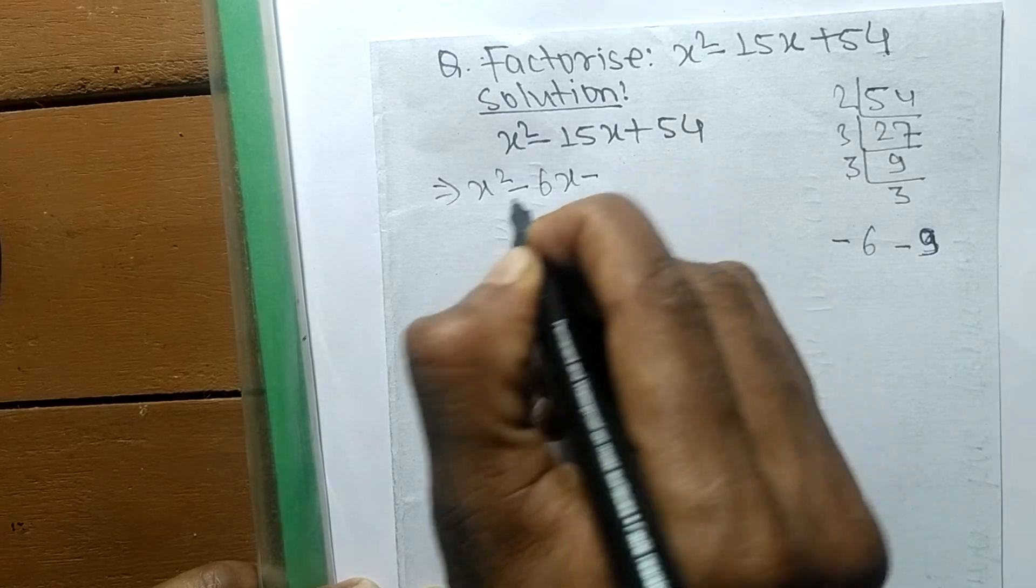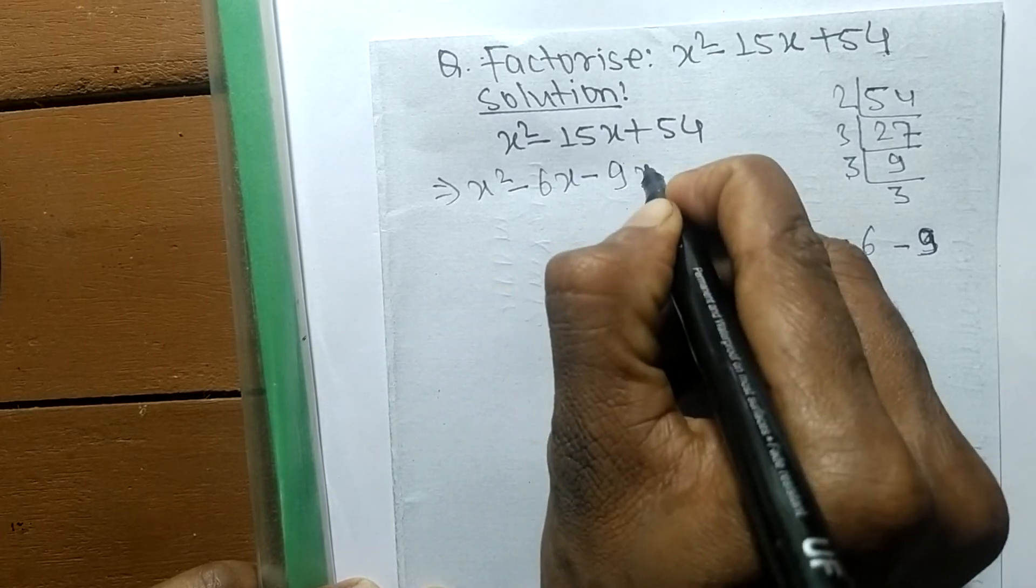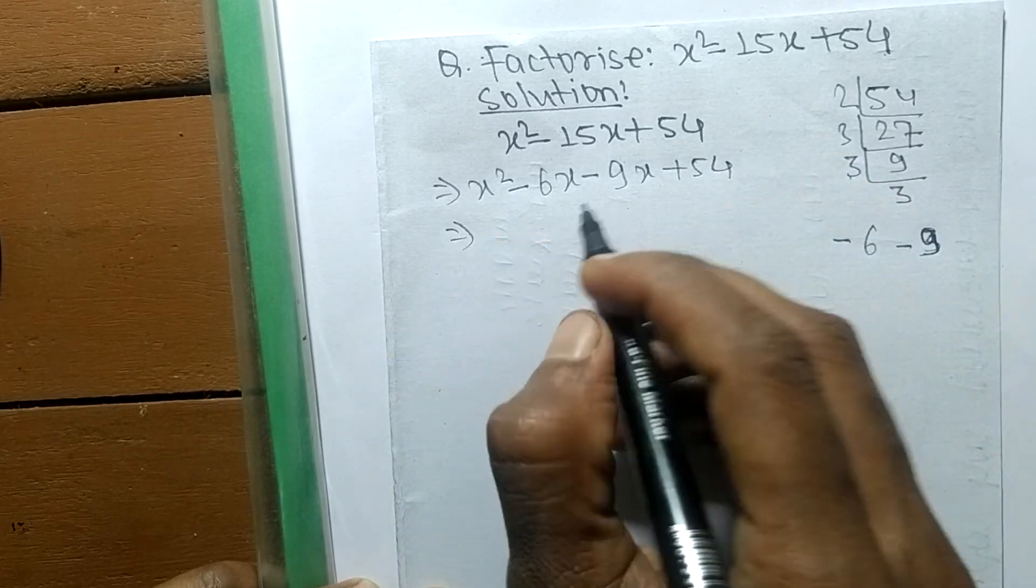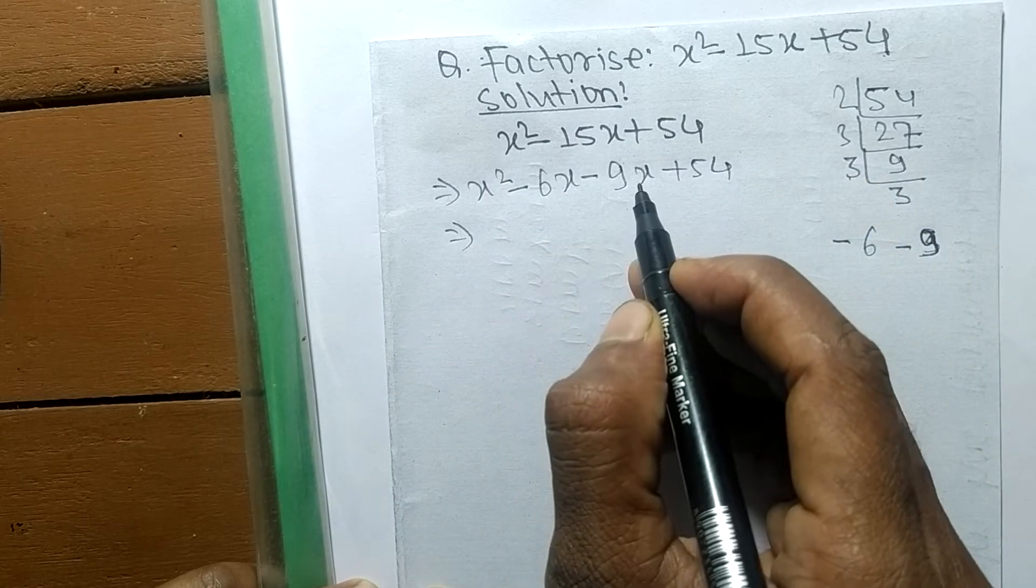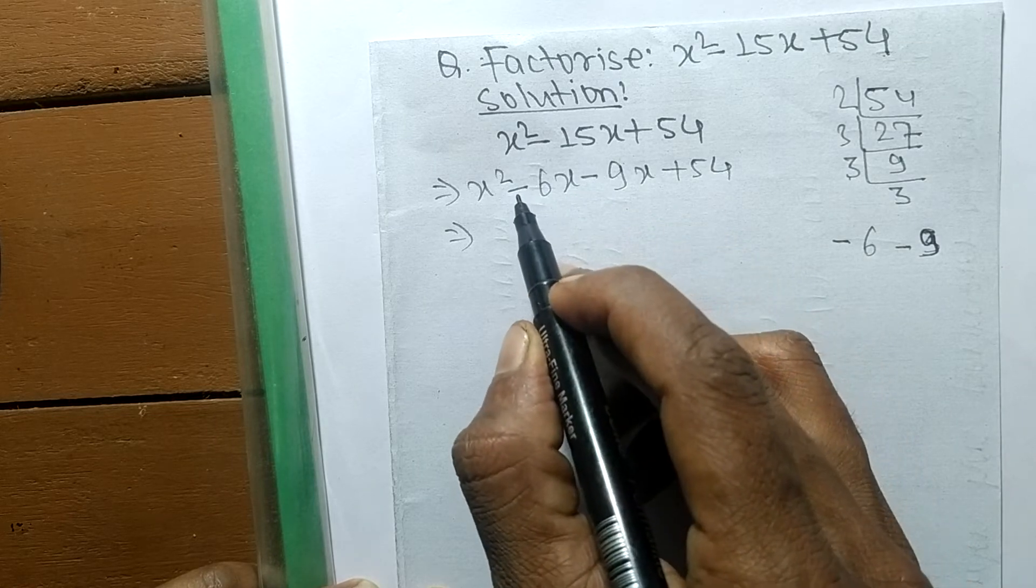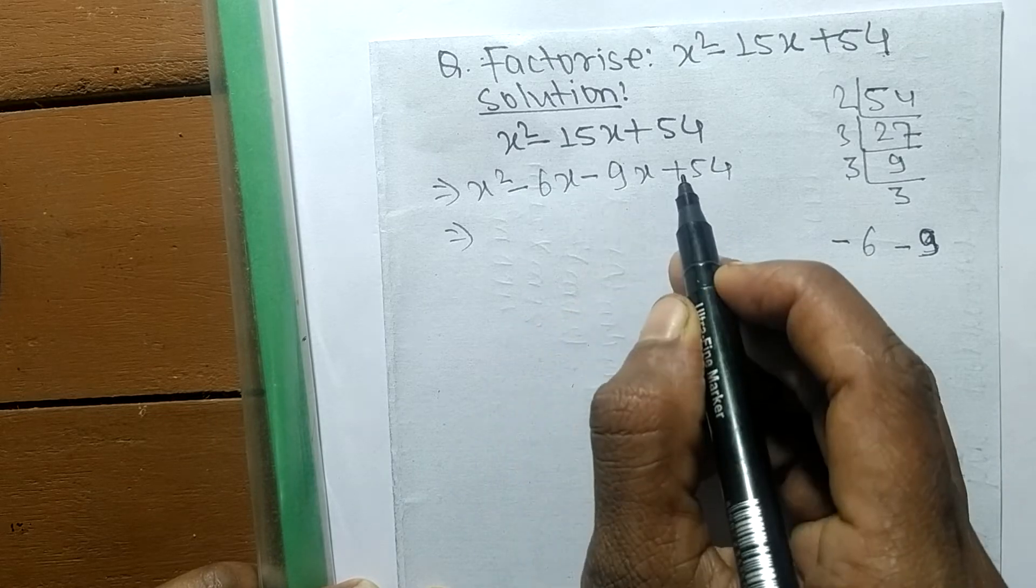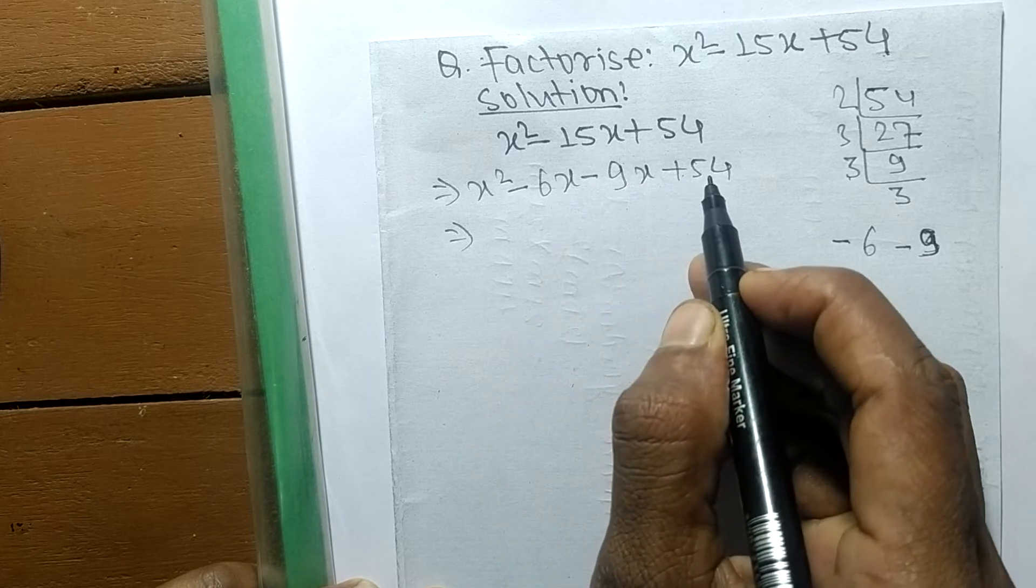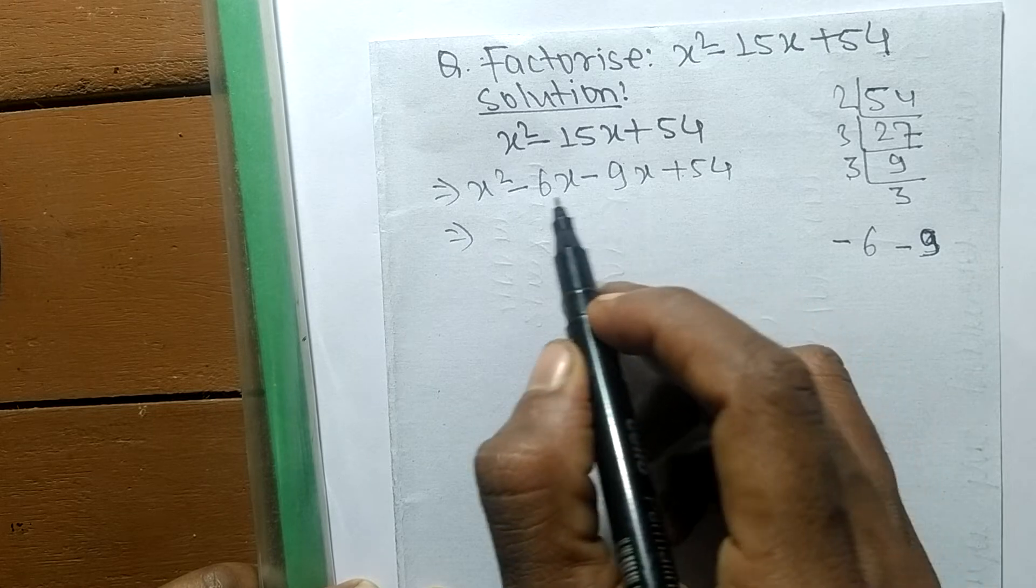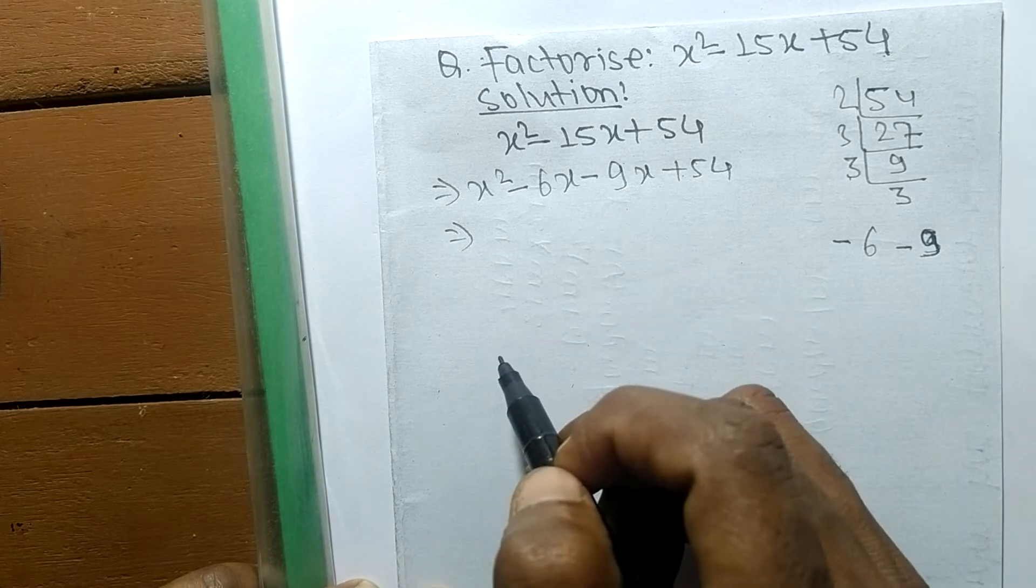So minus 6x minus 9x equals minus 15x, and minus times minus plus 6 times 9 equals 54. So now we have to separate these expressions into two pairs.